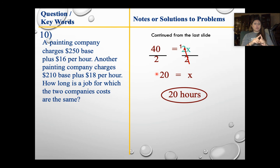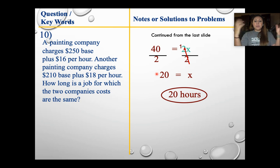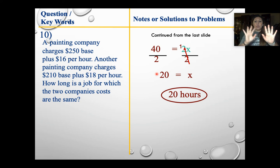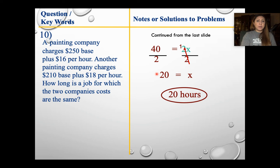And that's it for this lesson. This was a little longer than expected, but we covered a lot of information. To summarize: one solution means x equals a number; infinitely many solutions means I have a number equals the exact same number, like 3 equals 3; no solution means one number equals a completely different number — that will never be a true statement. And then we did a couple of word problems. That's it for me — I will talk to you guys later. Have a good one.